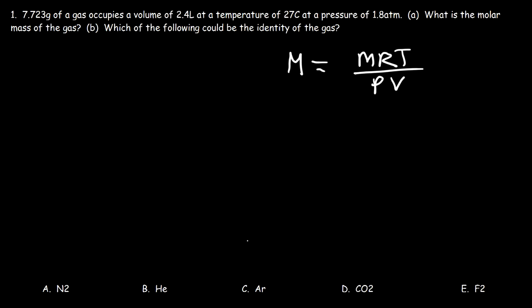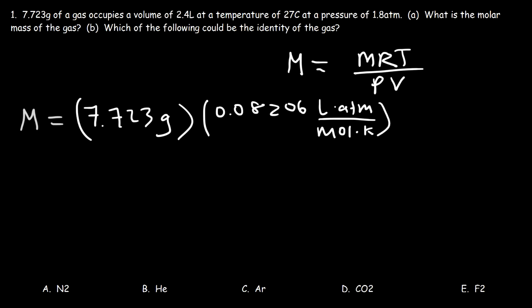So now we can answer part A. So let's plug in what we have. We have the mass in grams, which is 7.723. We have the R value, which we know to be 0.08206, and the units are liters times atm divided by moles times Kelvin. And then we have the temperature. It's 27 Celsius, but we need to convert that to Kelvin.